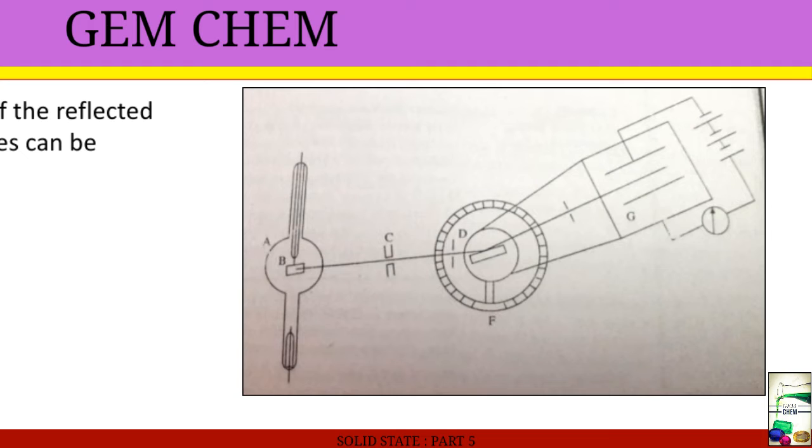There is a graduated turnable F that is this one. This goes on rotating into the desired angle of incidence. The reflected beam is passed onto an ionization chamber which is shown by the letter G, and this contains SO2. The reflected X-rays ionize the SO2 gas in proportion to their intensities, and the extent of ionization and intensity of reflection can be determined with the help of this electrometer. This experiment is repeated for various incident angles by rotating the frame of F, and the angles at which the maximum reflection occurs is determined. This is the basic experimental setup for this X-ray spectrometer.